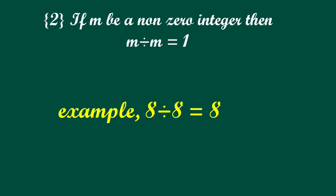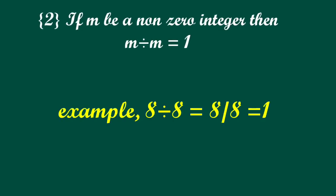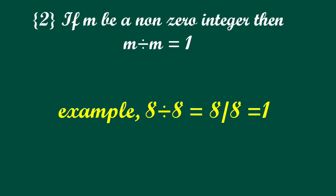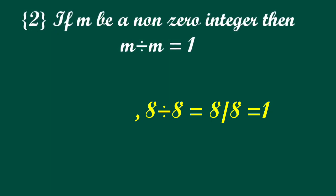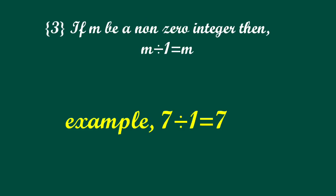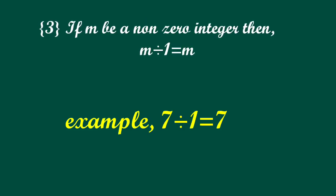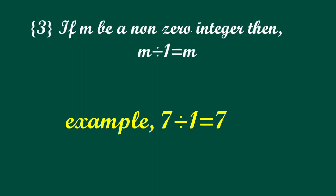If m be any non-zero integer then m divided by m itself is equal to 1. If m be any non-zero integer then m divided by 1 is equal to m itself.